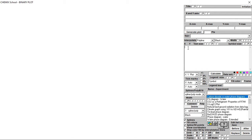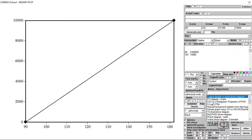To create a binary phase diagram, the first thing we have to do is to enter the X and Y limits. Click the calculate button to see the changes.